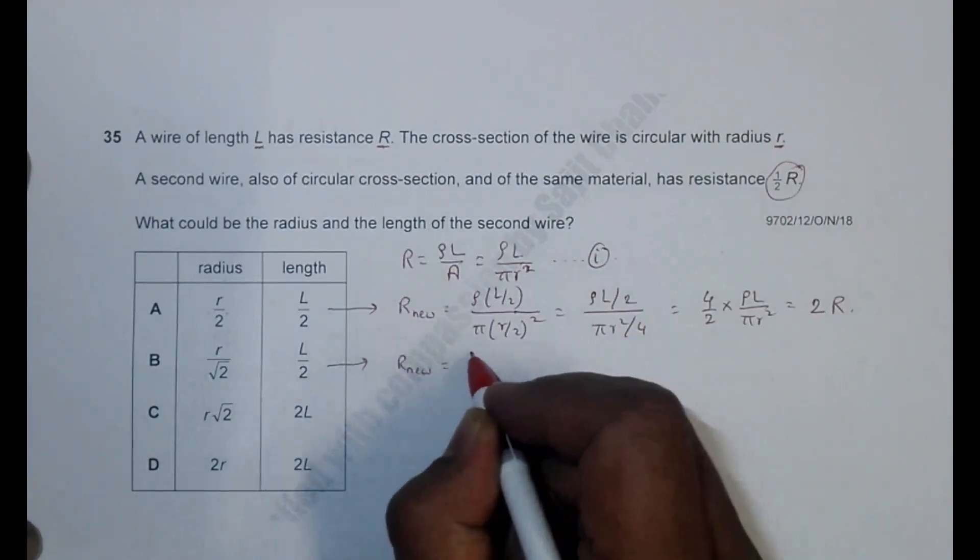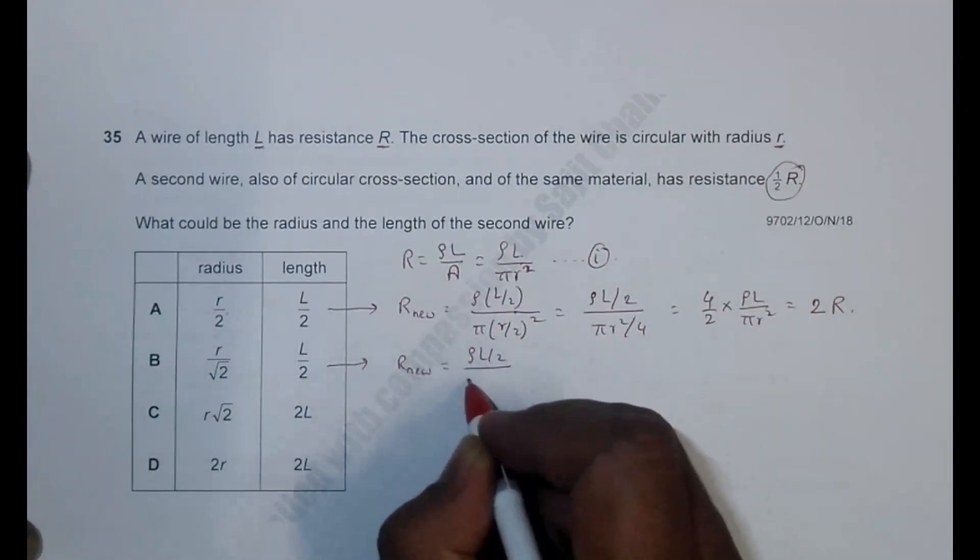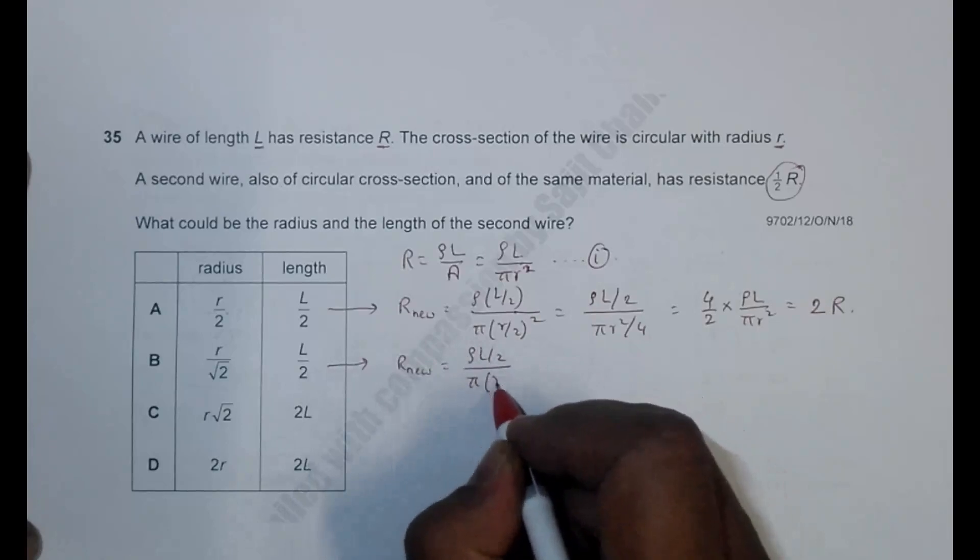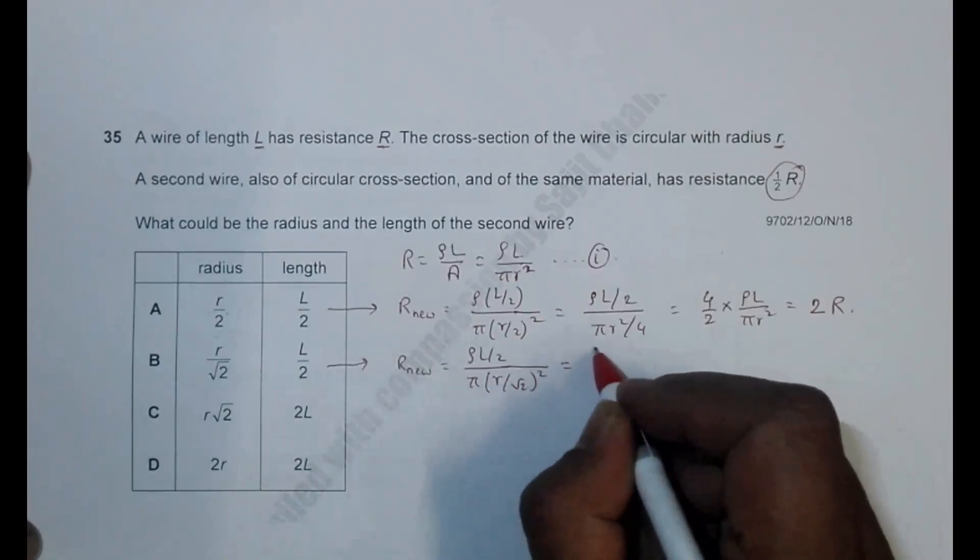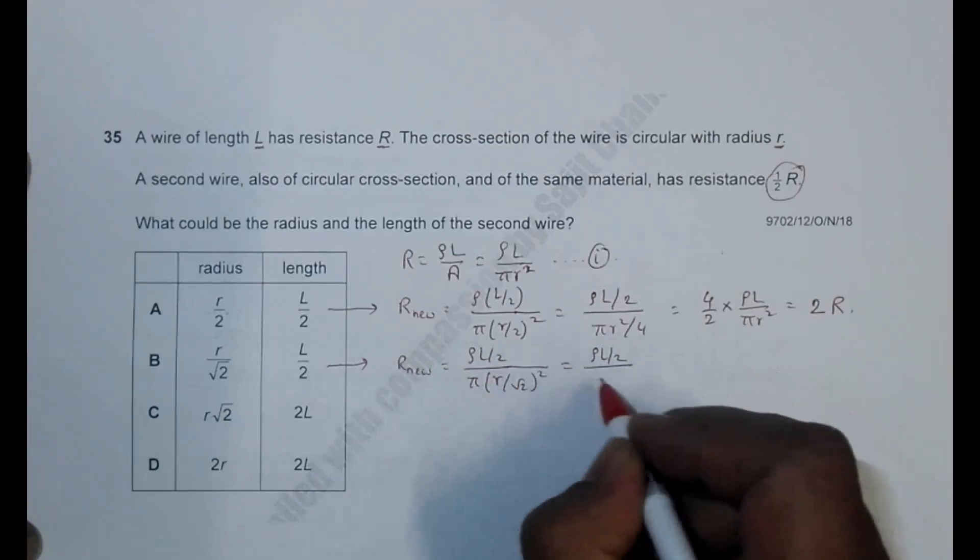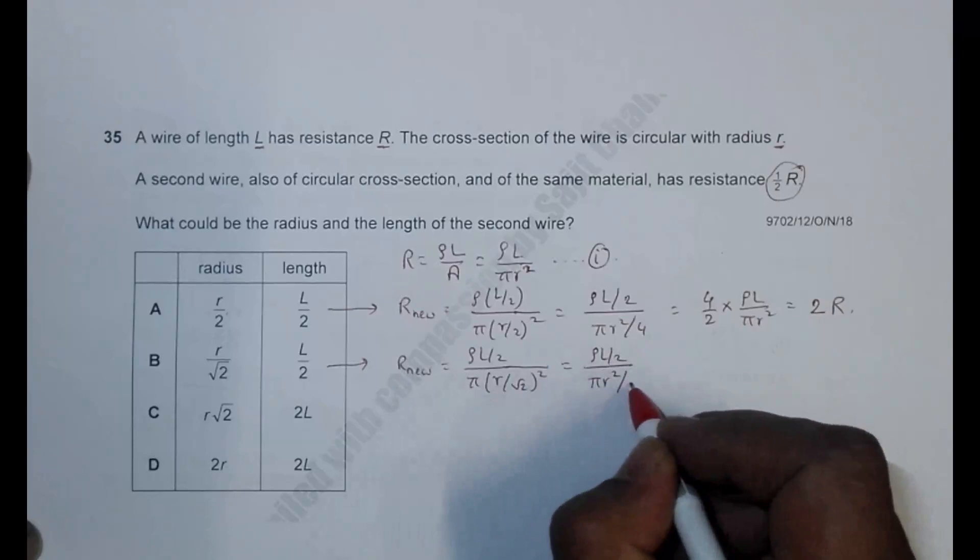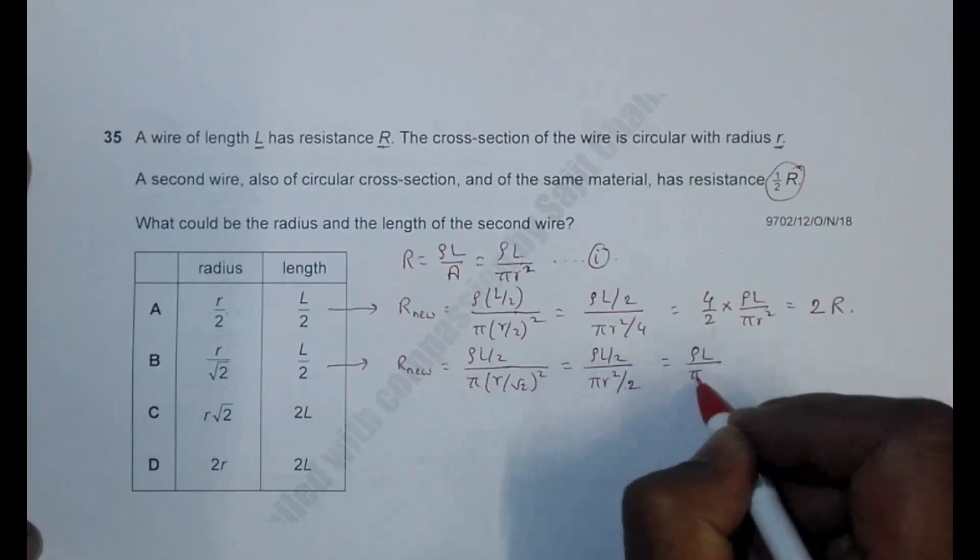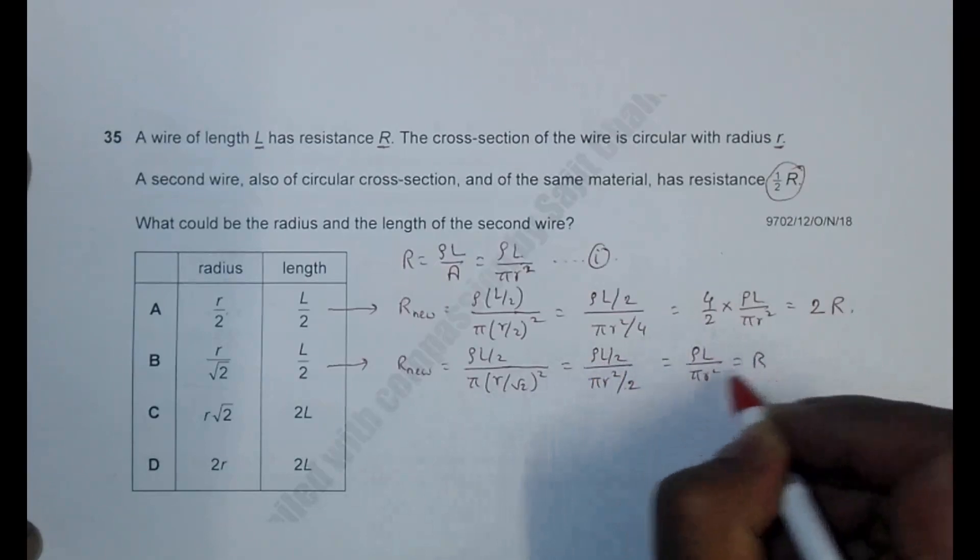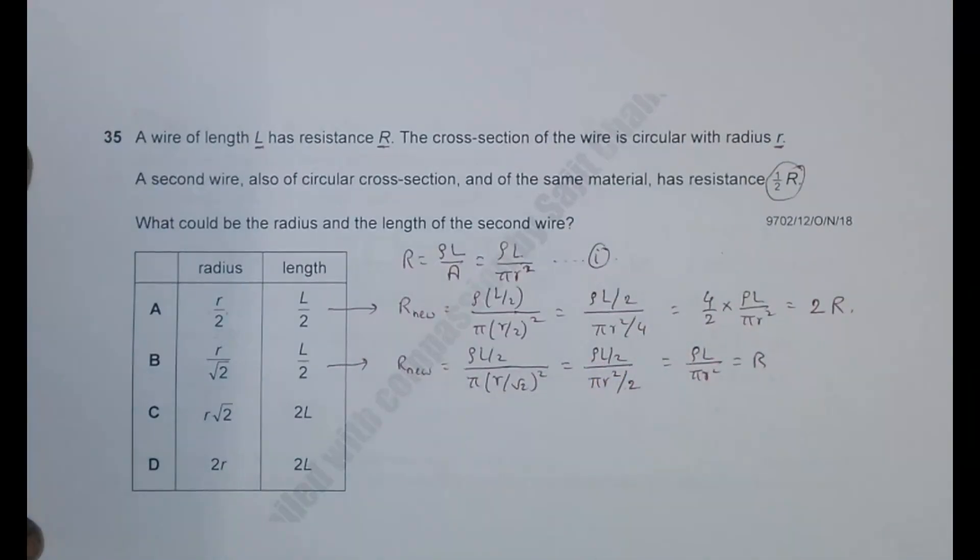So if I do it here, R_new equals ρL/2 then π(r/√2)². So it will be equal to ρL/2 divided by πr²/2. The 2s cancel, simply ρL/πr², and it's equal to R. So this is equal to R, not correct.